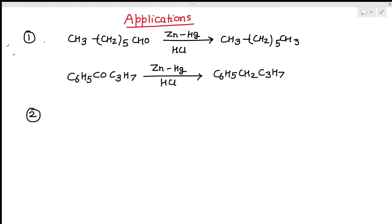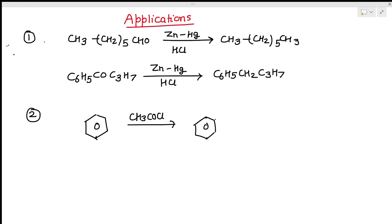Secondly, it can be used for introducing a straight-chain alkyl group in aromatic rings without rearrangement. For example, a benzene ring can be treated with CH3COCl so that it gets acetylated to give a COCH3 group, and then Clemmensen reduction is performed on that intermediate.